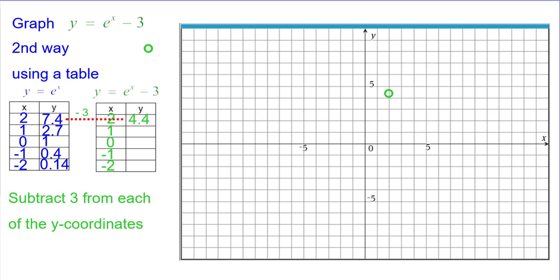So starting here, 7.4 minus 3 is 4.4. And so we'll plot 2 comma 4.4. Subtracting 3 there, we get 1 comma negative 0.3.